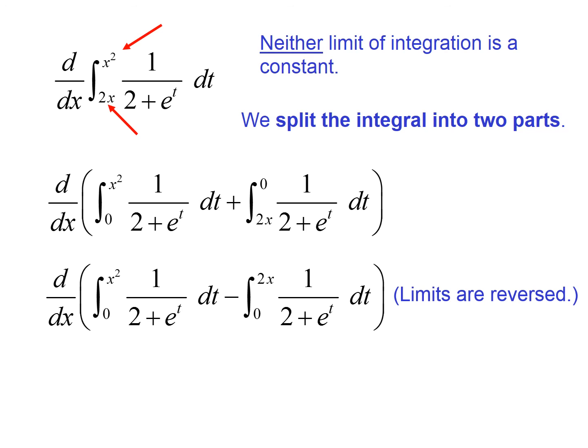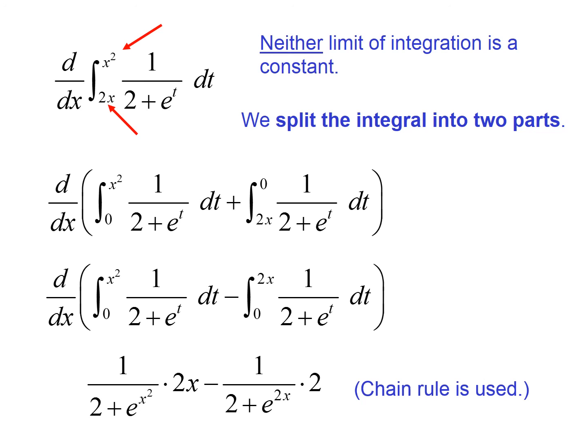Notice on the one to the right, we had to reverse the limits and it has become negative because the lower limit was a variable. We needed that to be a constant, so we reversed the limits and that gave us the subtraction sign. We used the chain rule on the left because we had to take the derivative of x squared, which gave us 2x. And on the right, we had to take the derivative of 2x, which gave us 2. And so simplifying this, this is our final answer.